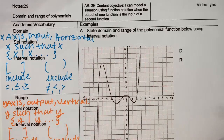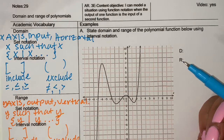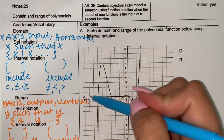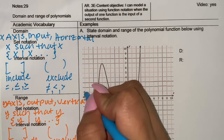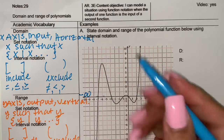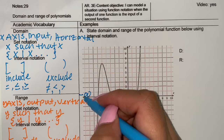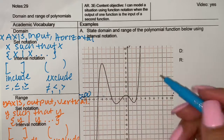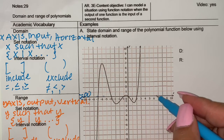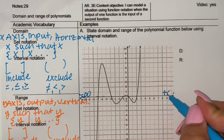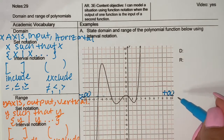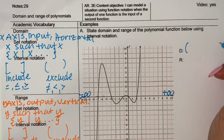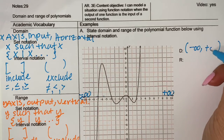State the domain and range of the polynomial function below using interval notation. Interval notation is going to be either the brackets or the parentheses. You're going to look at the horizontal or the x-axis right here. You start from the left — this is negative infinity. There's nothing stopping your graph from expanding left on the x-axis. On the right, there's nothing stopping your graph from approaching positive infinity. Since all numbers are included, negative infinity and positive infinity. Next, let's look at the range.